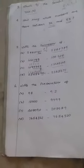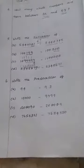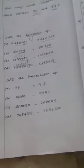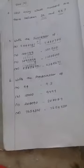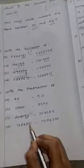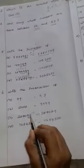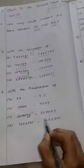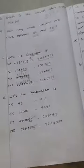Next, write the predecessor of the given numbers. Predecessor means minus 1. So 94 minus 1 is 93; 10,000 minus 1 is 9,999. For the next number, check the last 2 digits — if it ends in 90, the predecessor ends in 89. For example, 21 minus 1 is 20, and the other digits remain the same.